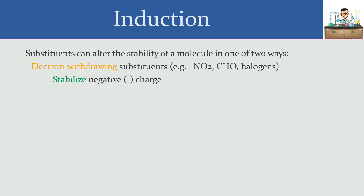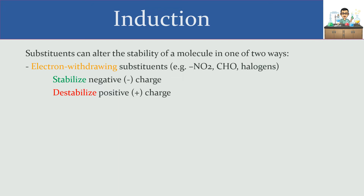On the other hand, if we have something with a positive charge, that means it's electron deficient. If I take away electron density from something that's already electron deficient, I deviate it even more from neutrality. That positive charge is kind of like someone owing money to somebody else — I'm already short on cash, and then somebody else comes in and takes even more money away, getting that person even more in debt. So having a positive charge is already a bad situation in terms of electron deficiency, and having an electron withdrawing substituent would make things worse.